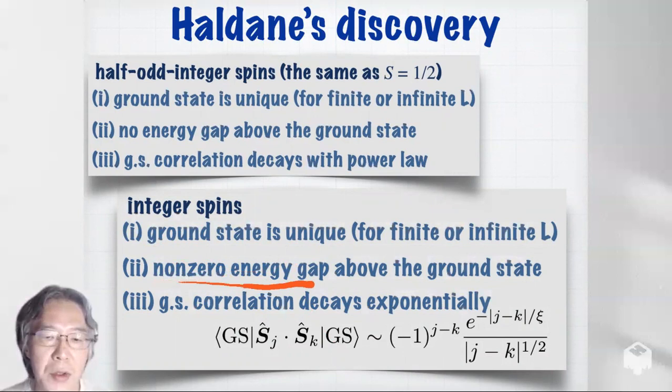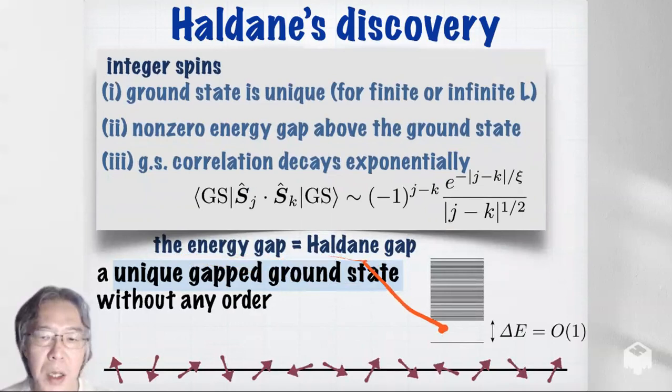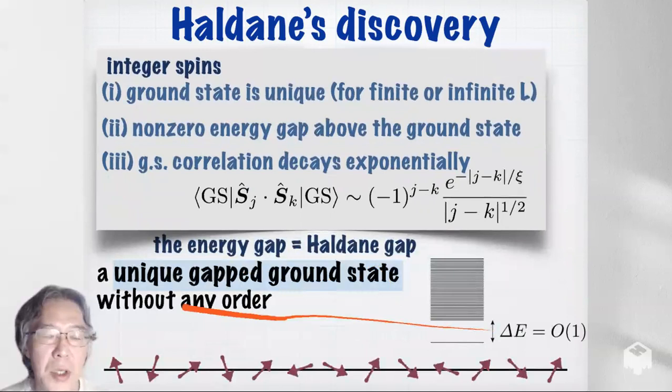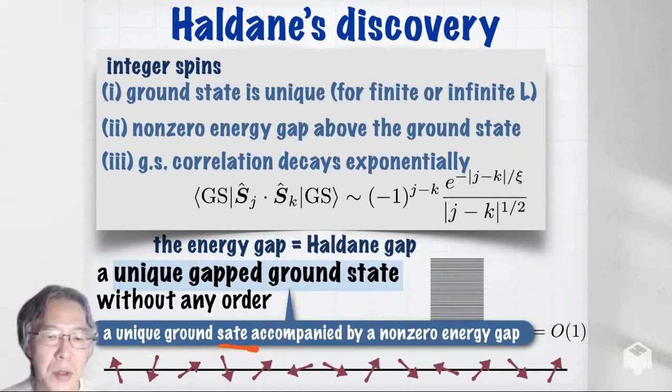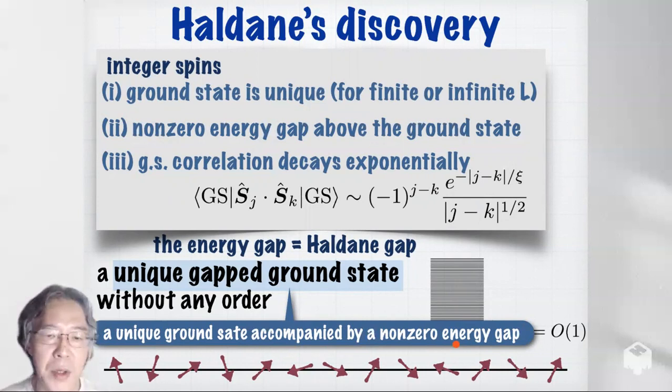But for integer spin, things change: the ground state is still unique, but there is a non-zero energy gap immediately above the ground state energy — the Haldane gap — and the ground state correlation function decays exponentially. So in short, for integer spin you have a unique gapped ground state without any order. To be precise, this means a unique ground state accompanied by a non-zero energy gap immediately above the ground state energy.